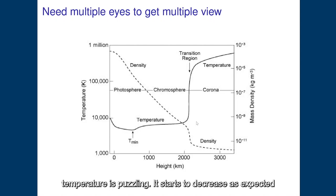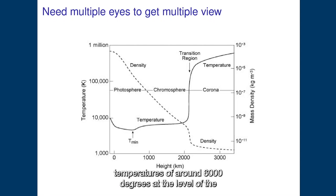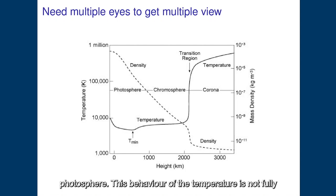However, the behavior of the temperature is puzzling. It starts to decrease as expected as you go away from the Sun, but then it increases again, and in particular reaches values of the order of 1 million degrees in the corona while you have temperatures of around 6,000 degrees at the level of the photosphere.